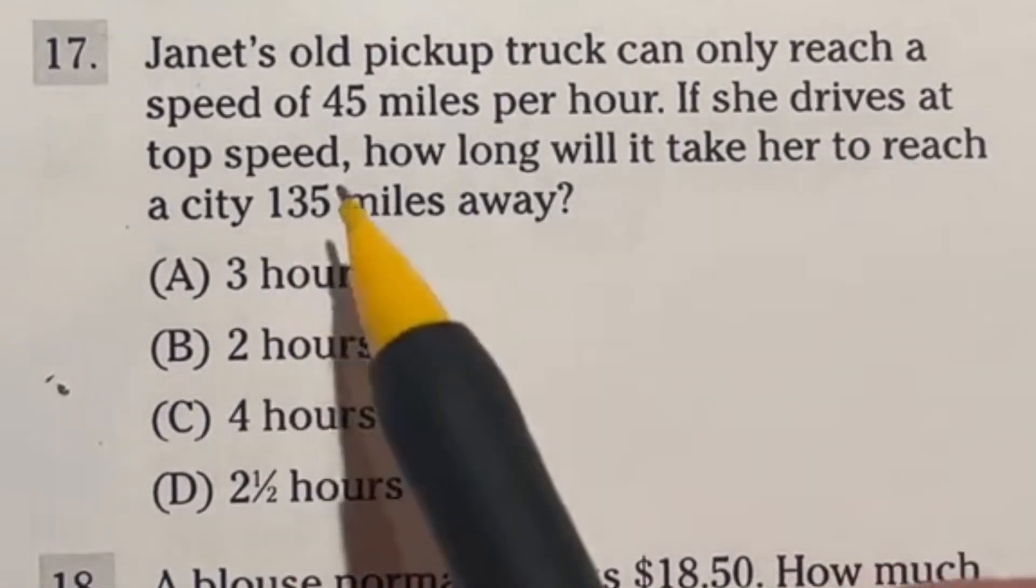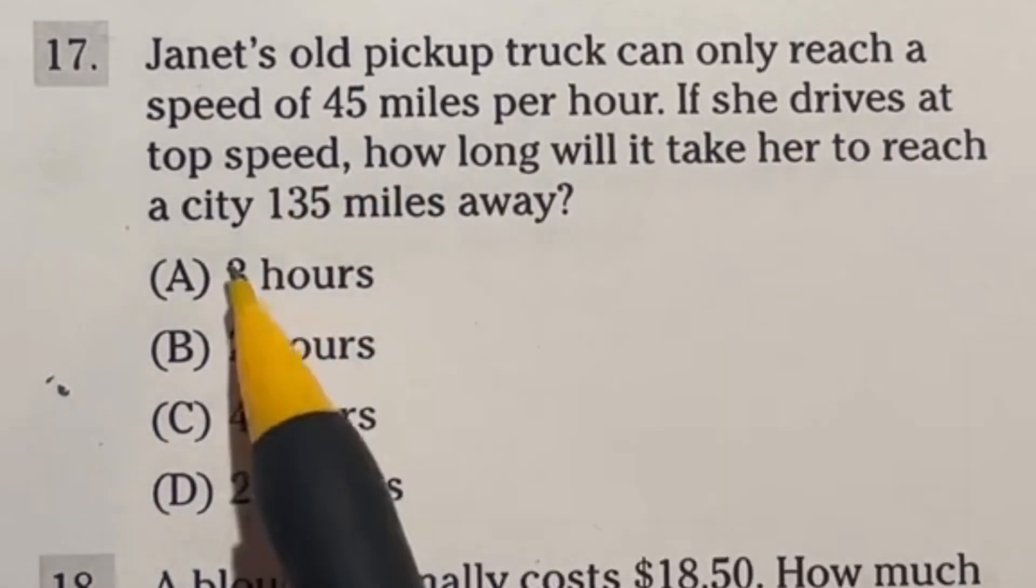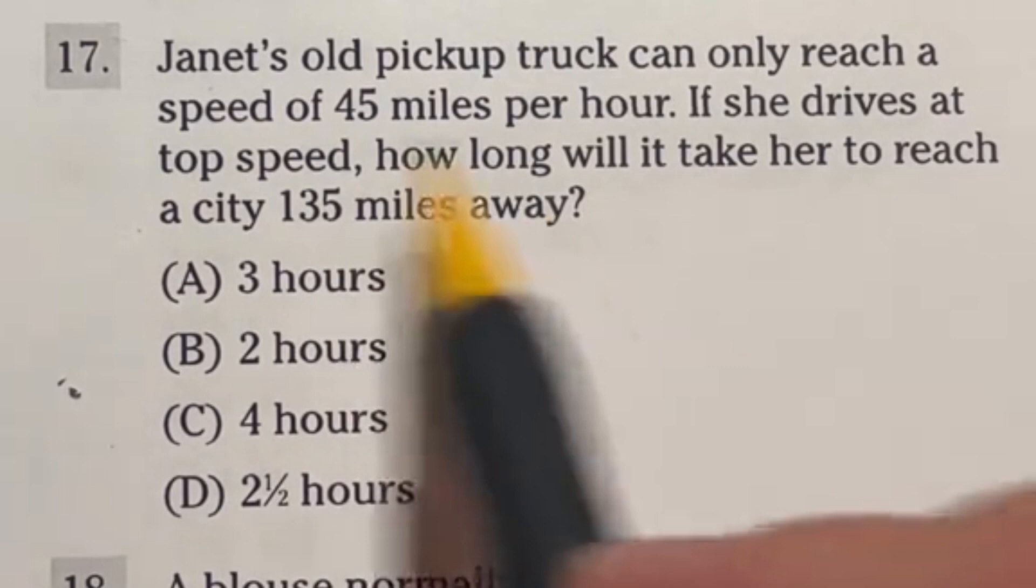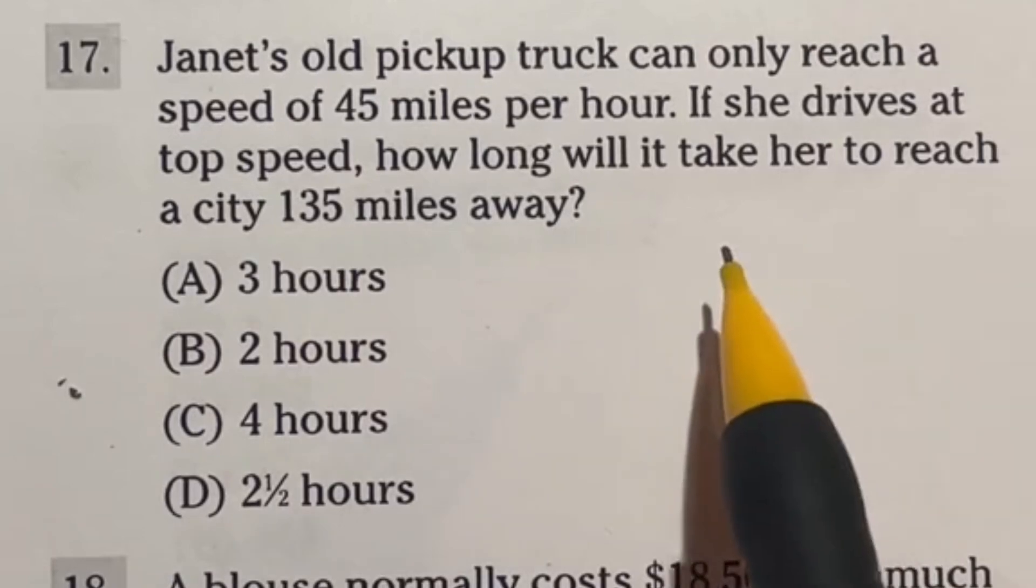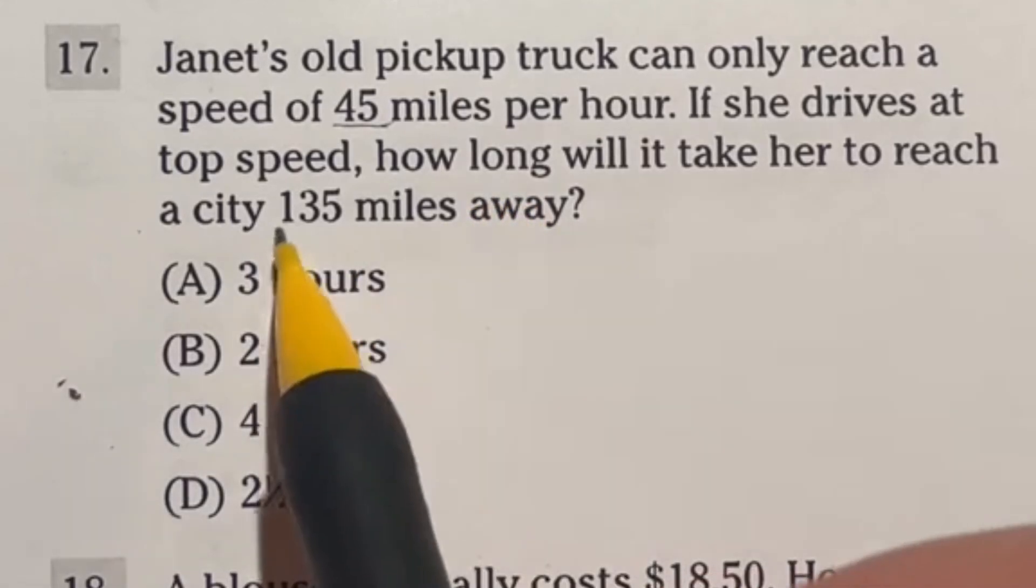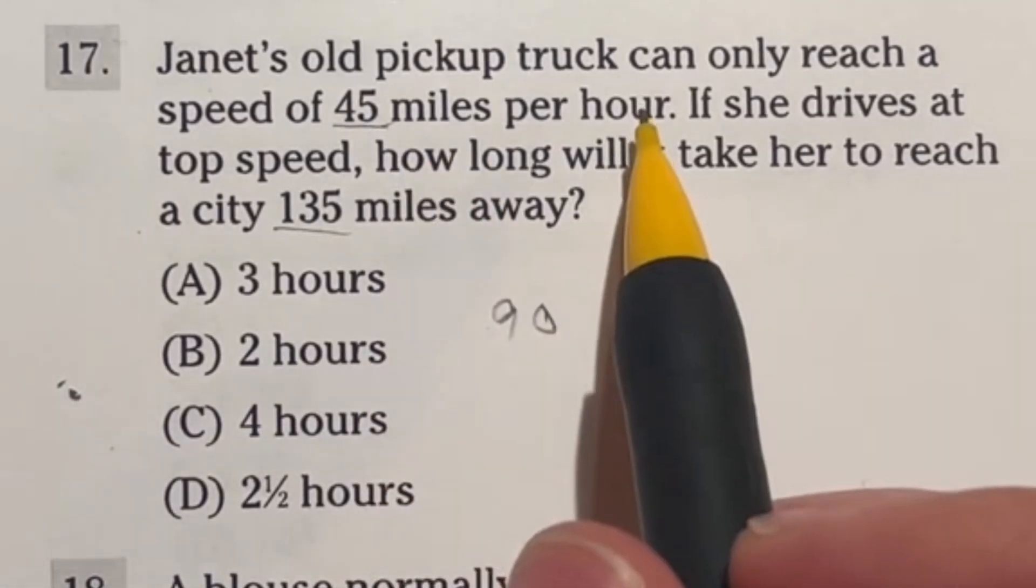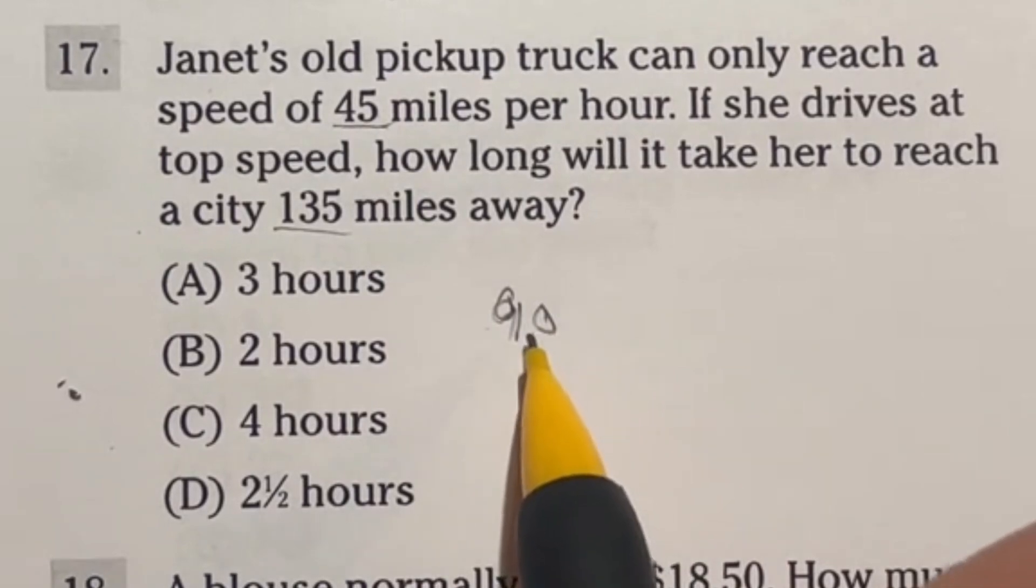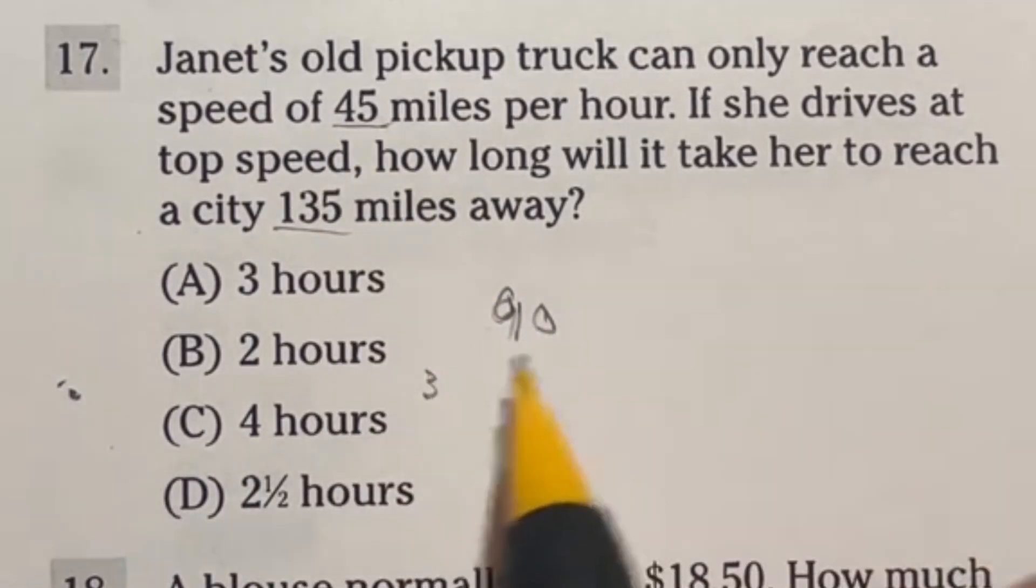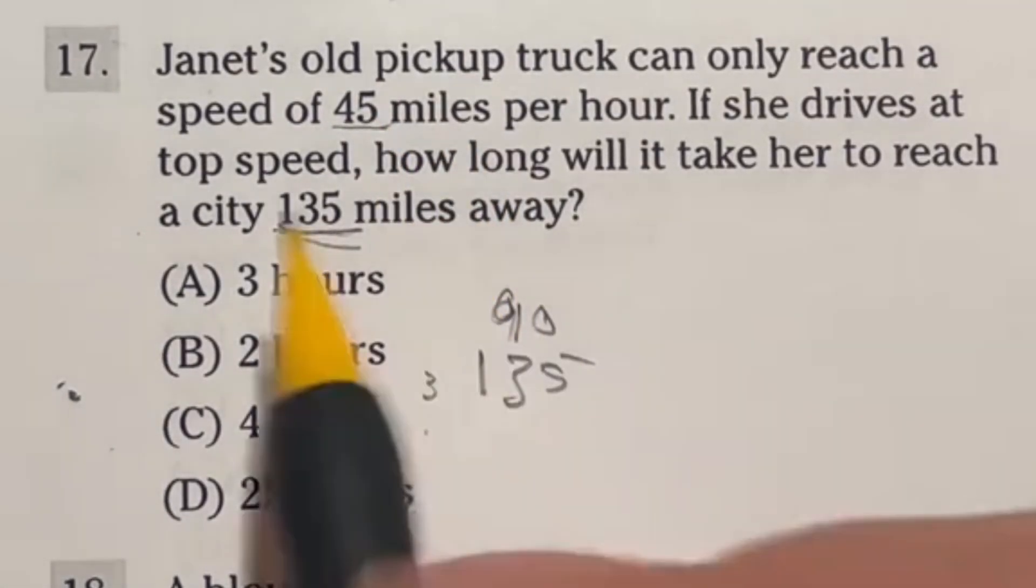Number 17, there's a lot of ways you can handle this. Janet's old pickup truck can only reach a top speed of 45 miles per hour. If she drives at top speed how long will it take her to reach a city 135 miles away? You could do 135 divide by 45, but I'm just going to keep adding up 45s until I get to 135. 45 and 45 gives me 90. That's two hours, 90 miles in. If I go another hour for a total of three hours, now we're looking at 90 plus another 45, which is 135, exactly where we need to be. This answer is definitely A.